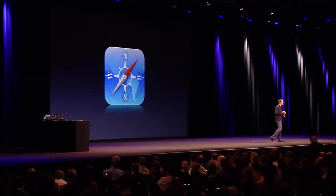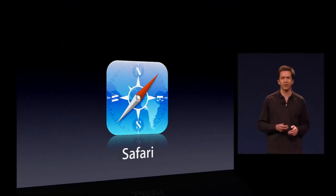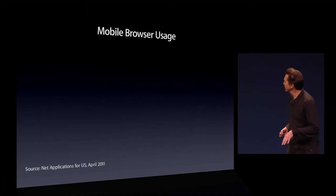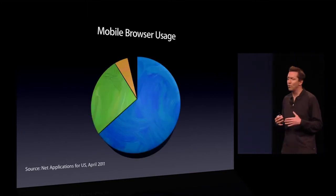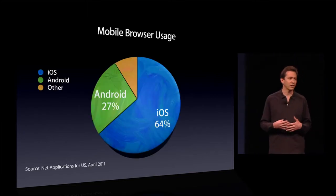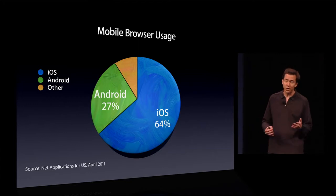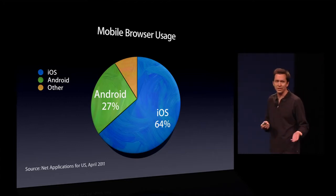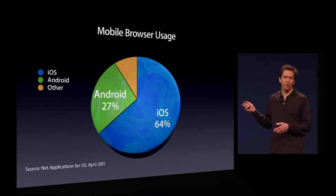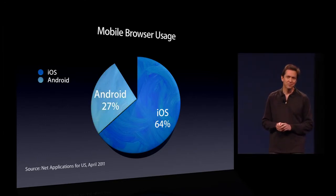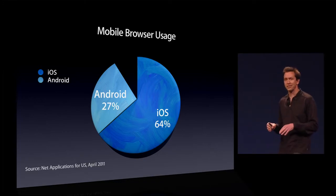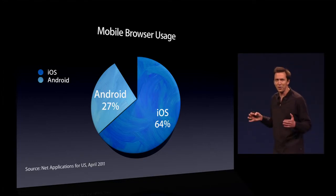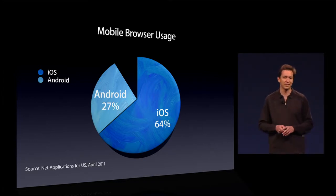Next is Safari. Safari is the best mobile web browser out there, and it's also the most popular. In fact, nearly two-thirds of all mobile web browsing is done on Safari. Beyond this, we took Apple's Safari Engine and open sourced it, and it's the basis of all web browsing on Android. So Safari Engine is the basis of more than 90% of all web browsing on mobile devices.